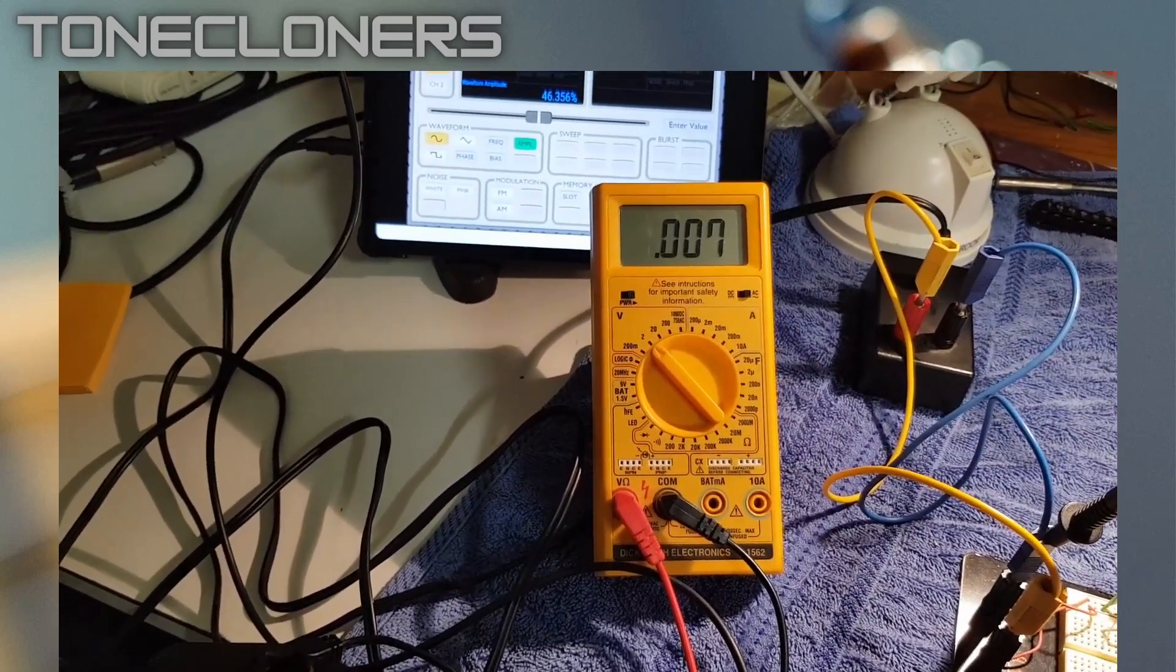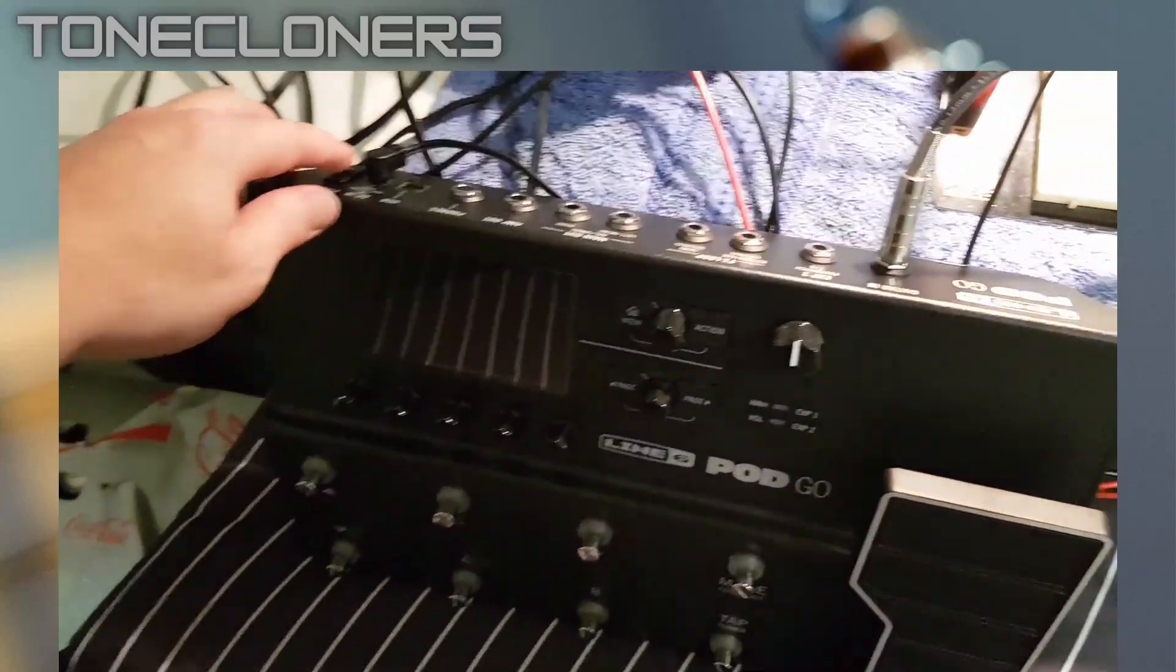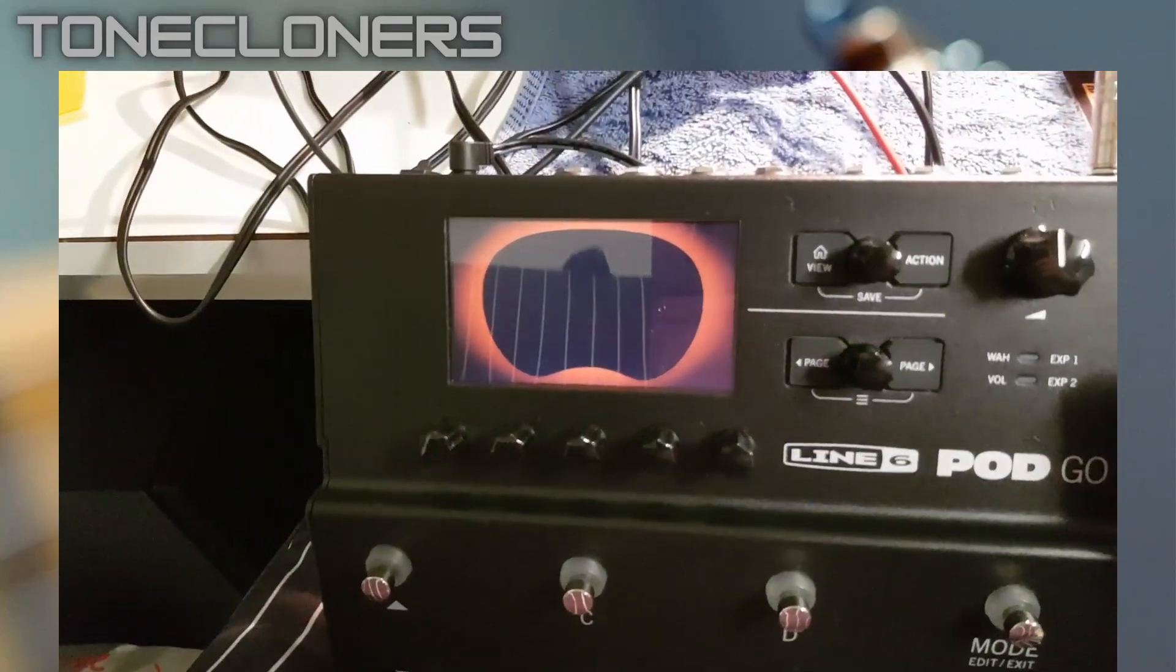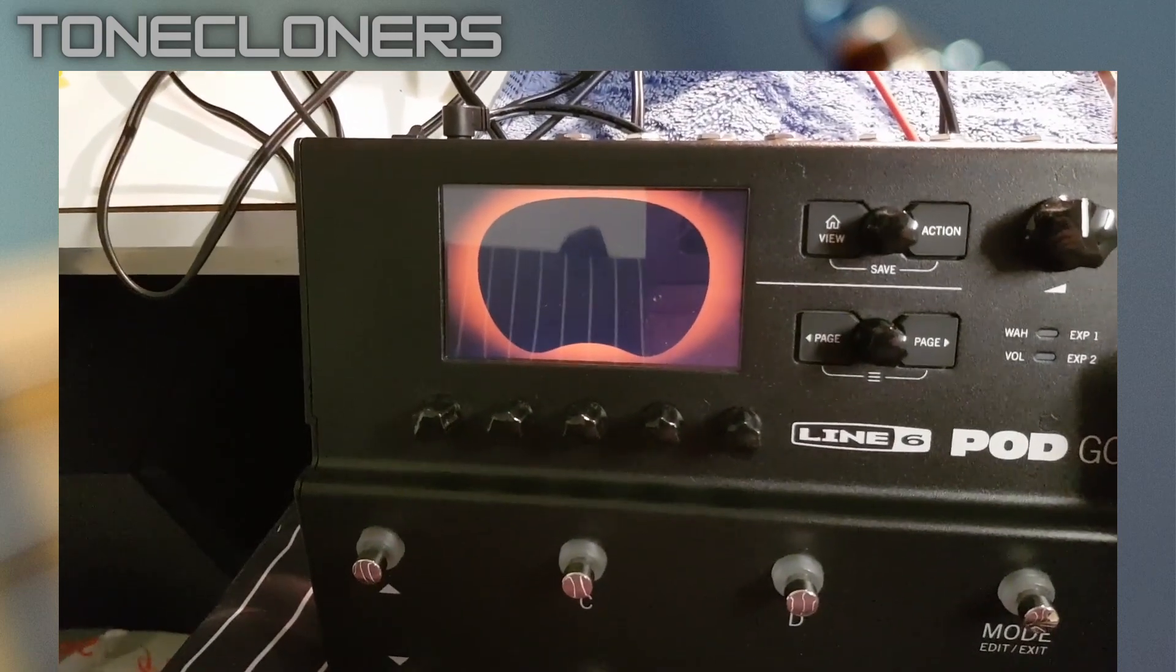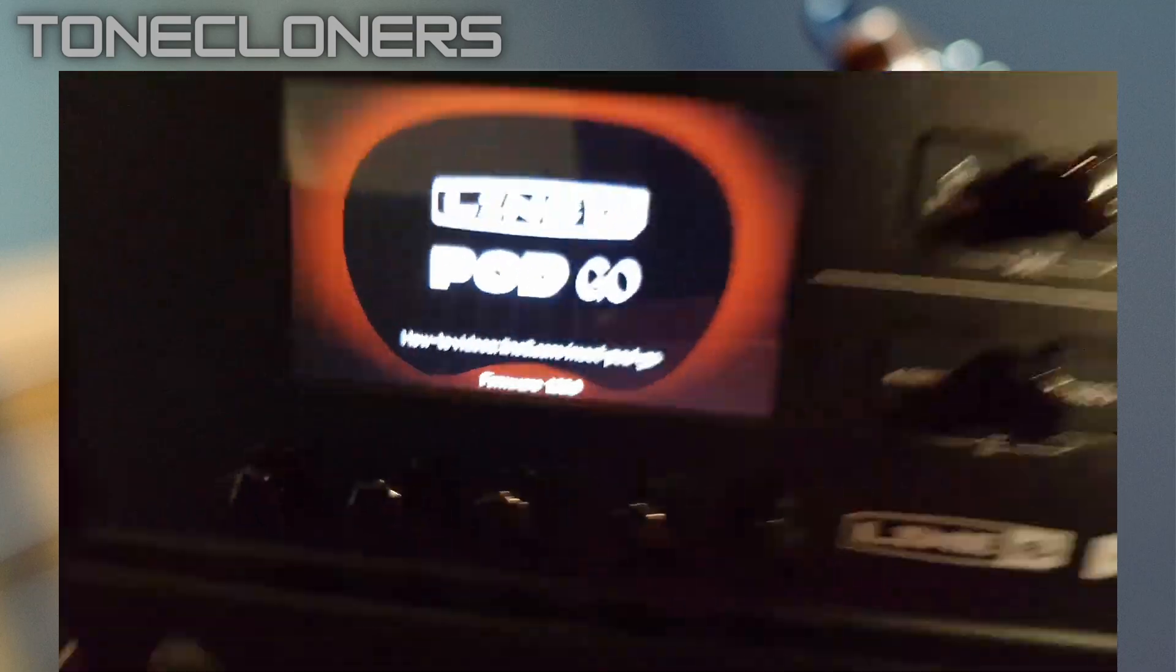which suggests to me that the input impedance of the Pod Go could be software controlled. It could be firmware controlled. It's not just a basic hardware input there. I'm going to turn that back on to see what we get, but I also want to show you the firmware version, which is 1.30.